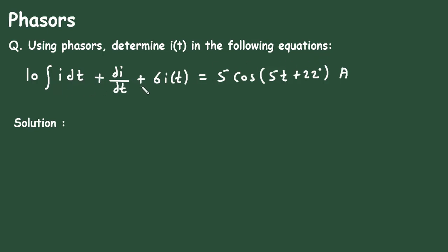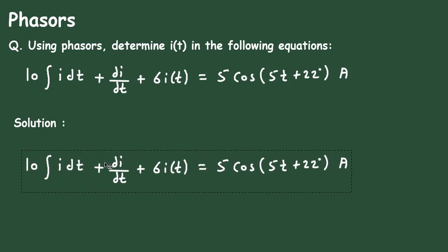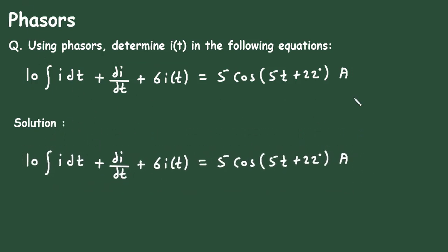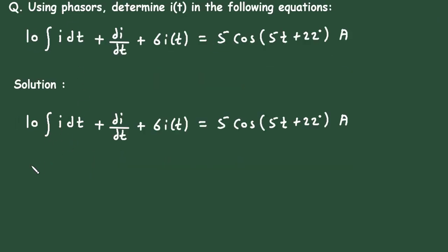Here we have to simplify this and find the value of I of t by using phasors. Solution, first of all we will copy this or we will write what is given. Now, here this is in time domain format, so we will convert this into phasor domain format.